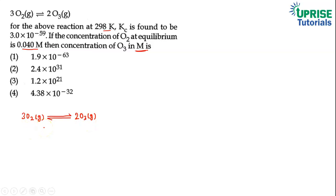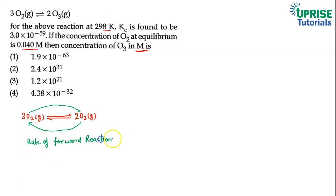From this chemical equation, we will find the rate of forward reaction and the rate of backward reaction. Oxygen is going forward to O₃, and O₃ is converting back to O₂. So we will write rate of forward reaction and rate of backward reaction. O₂ has 3 moles, so the power on O₂ concentration will be 3.